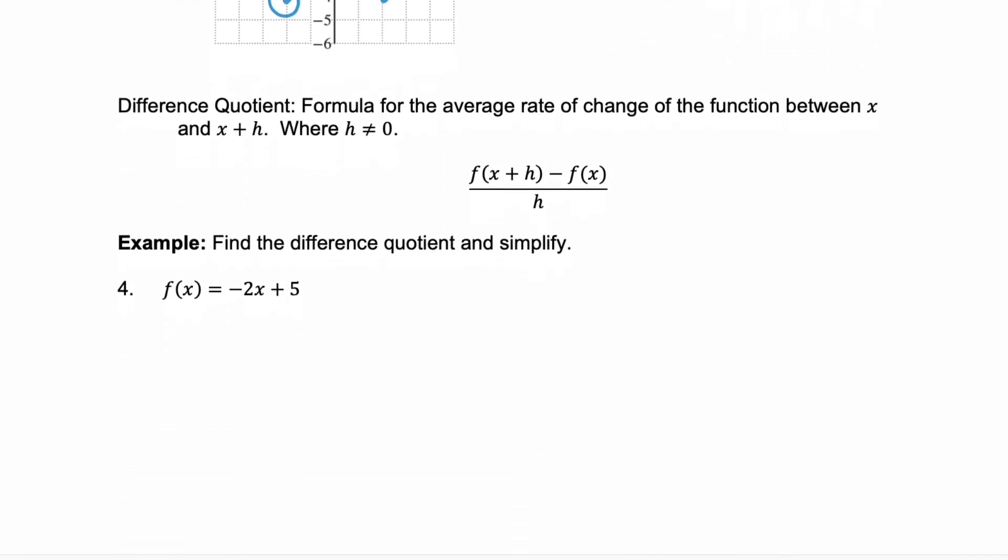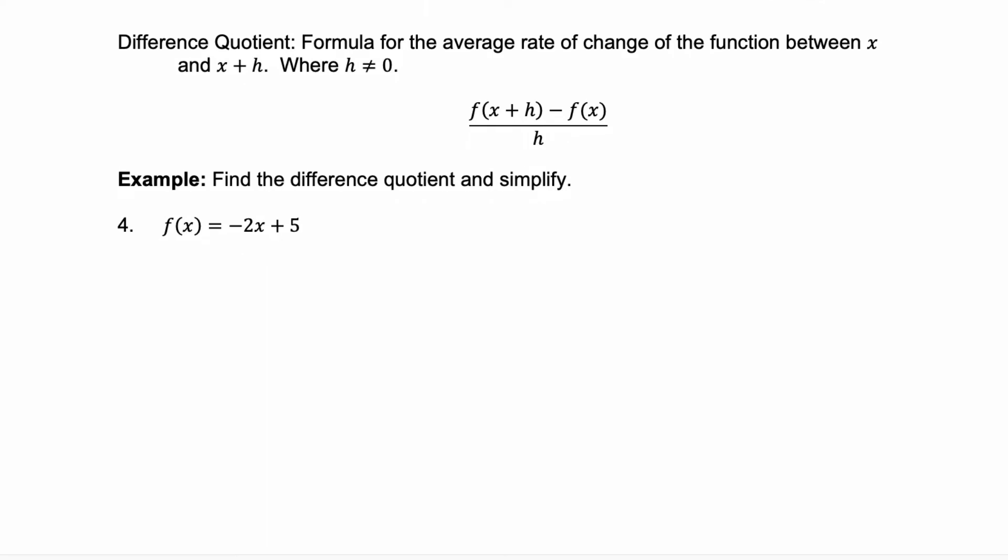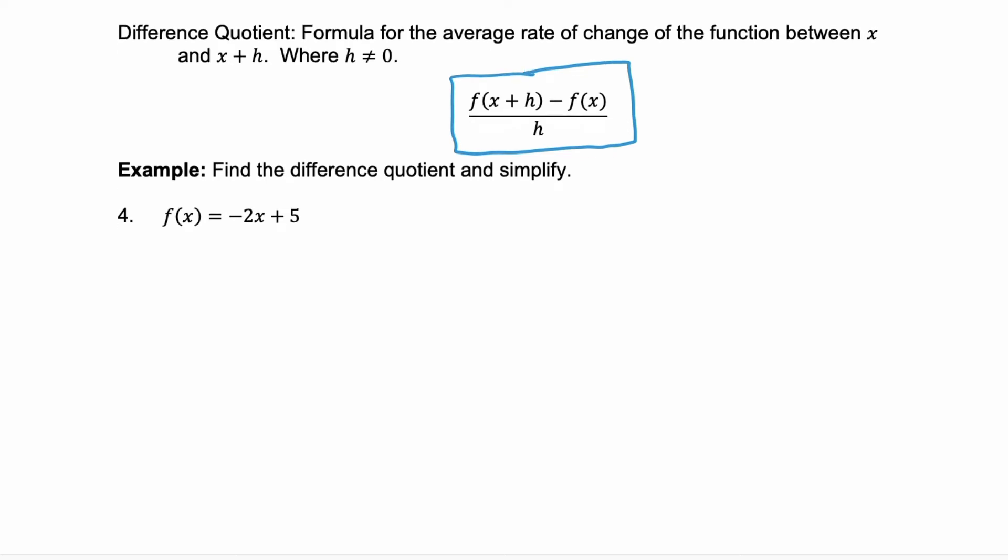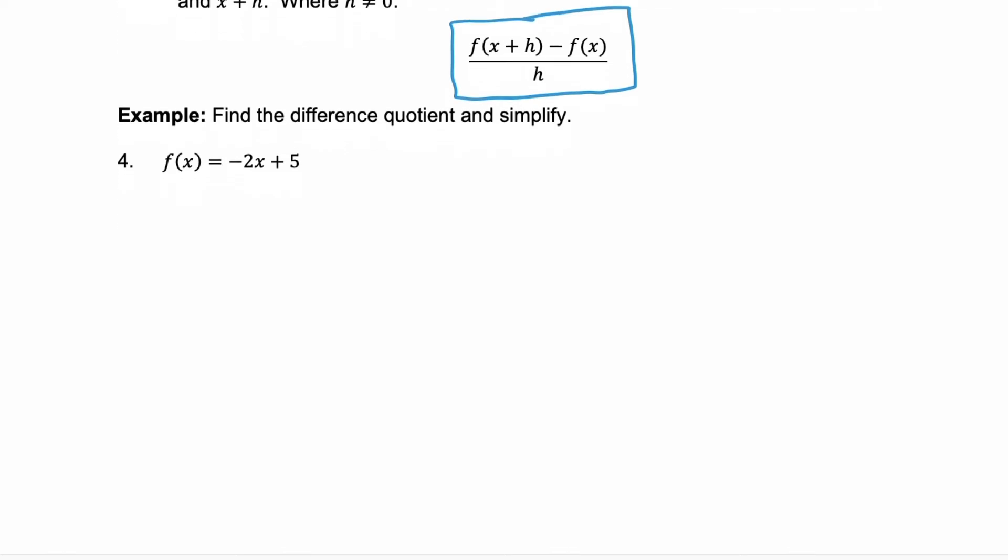Now the last thing we need to cover today is the difference quotient. The difference quotient is a formula for finding the average rate of change for a function between two values x and x plus h. This is your equation for the difference quotient and I'm going to teach you a trick for making sure you simplify it correctly and you don't miss any steps.